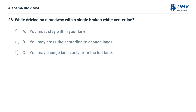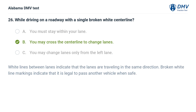While driving on a roadway with a single broken white centerline: A. You must stay within your lane. B. You may cross the centerline to change lanes. C. You may change lanes only from the left lane. Correct answer: B. White lines between lanes indicate lanes traveling in the same direction. Broken white line markings indicate it is legal to pass another vehicle when safe.